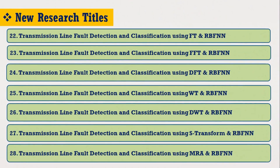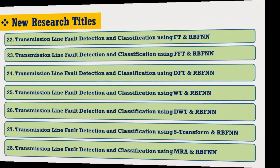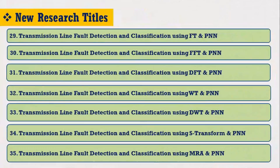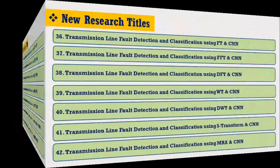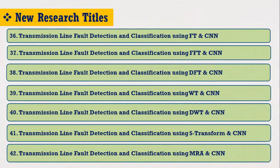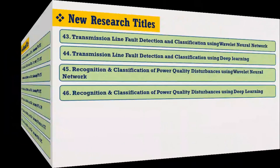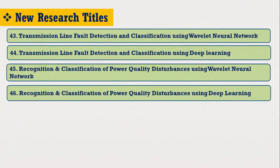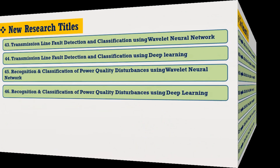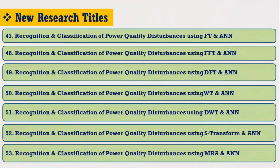Based on power system fault classification, power quality disturbances, and intelligent techniques, various research titles can be considered for your research. These topics are so important that many researchers are still doing their PhDs in power system fault identification and classification as well as power quality disturbance classification.